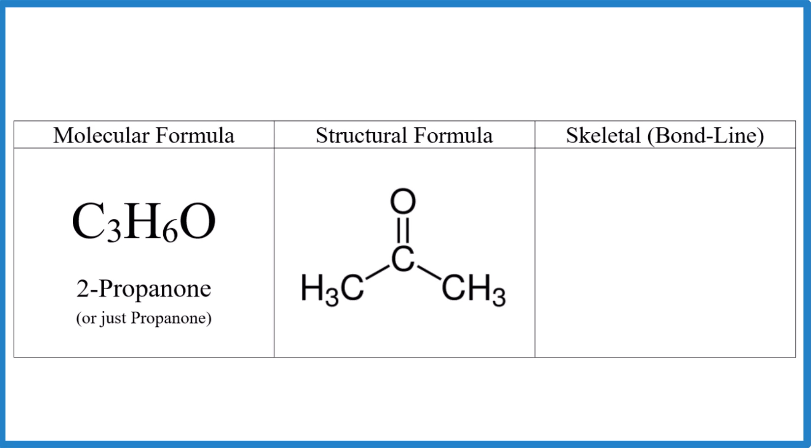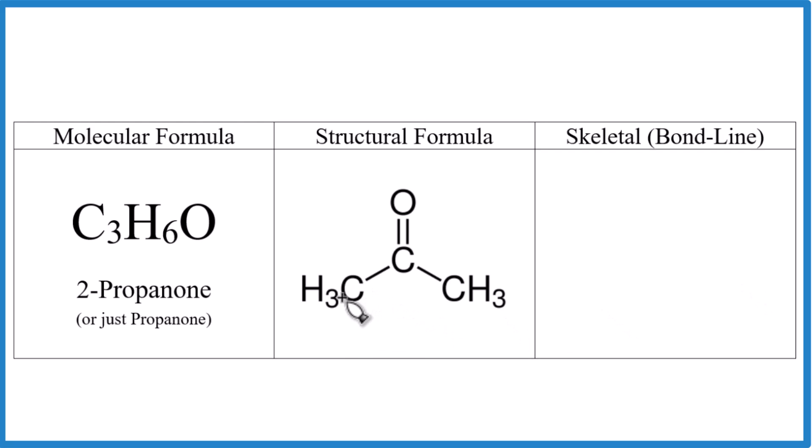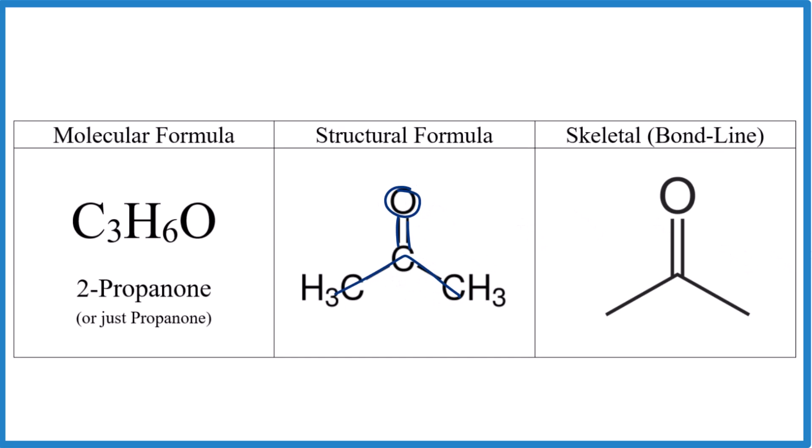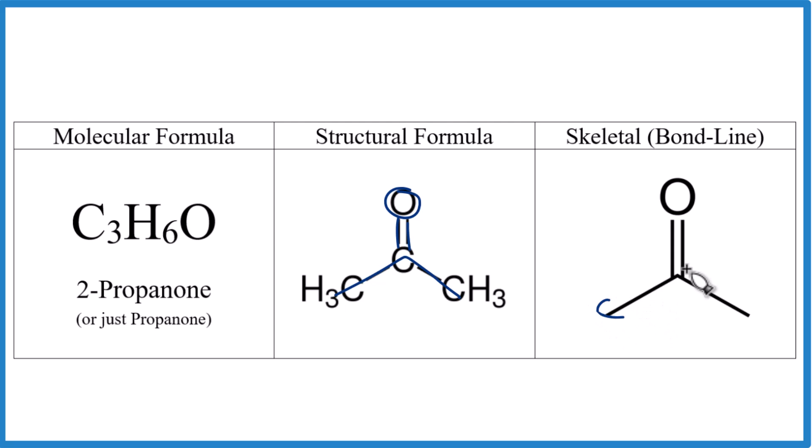If we want to draw the skeletal formula, what we'll do is we'll just draw the carbons as lines like this here. So one, two, three. Then we'll put our double bond oxygen off the center there. That's going to look like this. And note we have our one, two, three carbons.